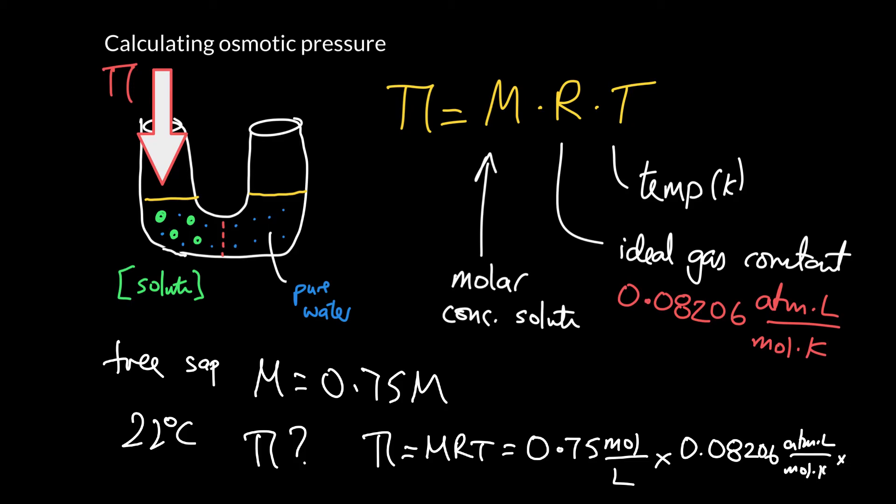And the temperature is 22 degrees C. Well, remember, to convert to Kelvin, we essentially add 273.15. If there's no decimal places there, then we just end up with 295 Kelvin.